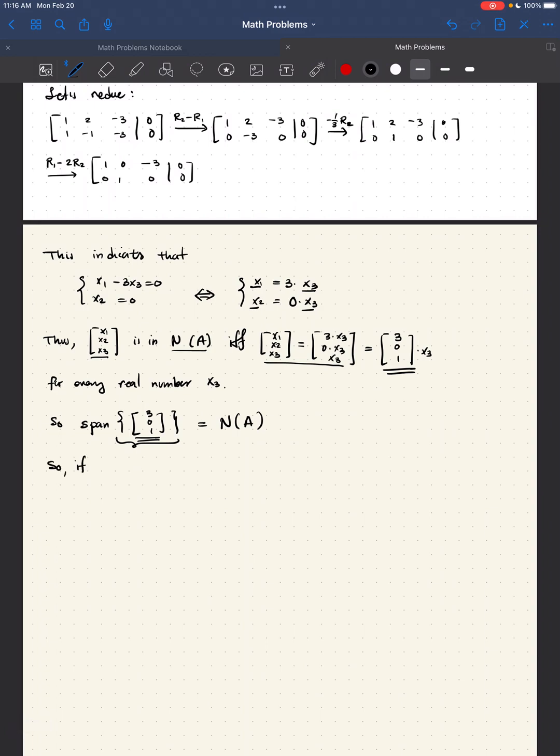So, if we set x3 to a non-zero real number, for example, x3 to be 1, we obtain x1 times [1, 1], plus x2 times [2, -1], plus x3 times [-3, -3], is equal to 3 times 1, times the vector [1, 1], plus 0 times 1, times the vector [2, 1, negative], plus 1 times [-3, -3].